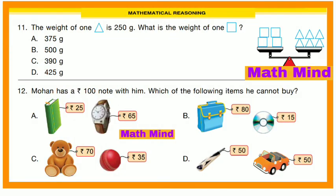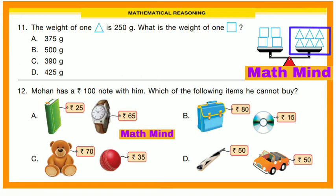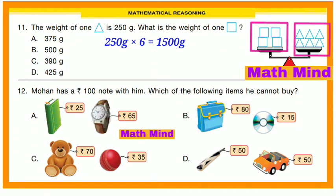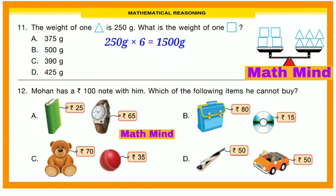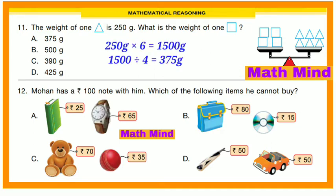Mathematical Reasoning, Question No. 11: The weight of one triangle is 250 grams. What is the weight of one square? Weight of 6 triangles = 250 × 6 = 1500 grams. 4 squares = 6 triangles = 1500 grams. So 1 square = 1500 ÷ 4 = 375 grams. Option A is correct.